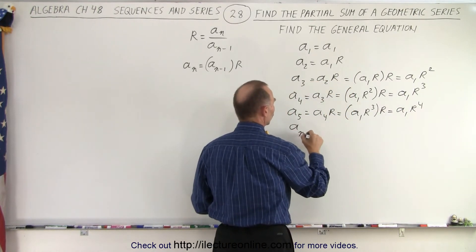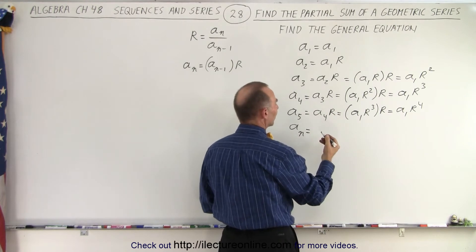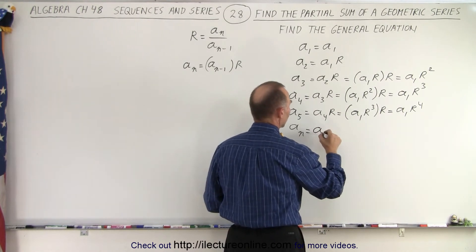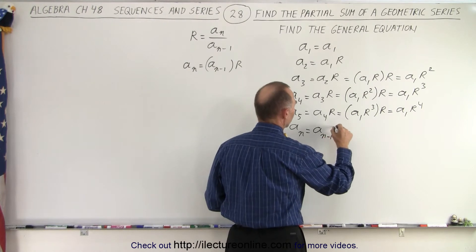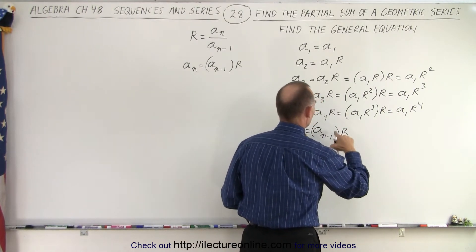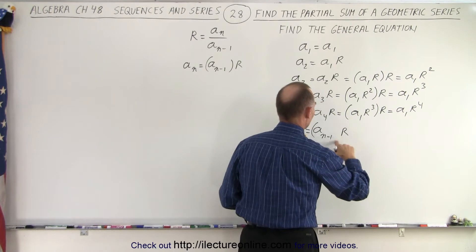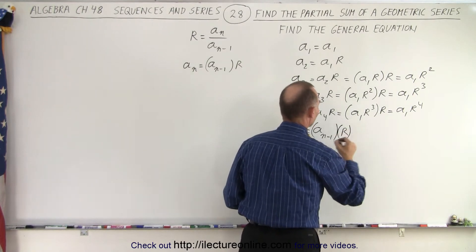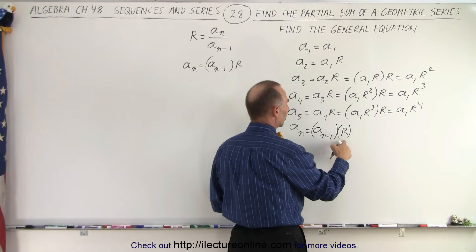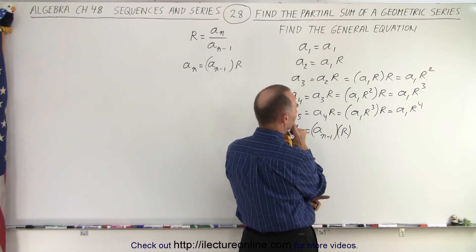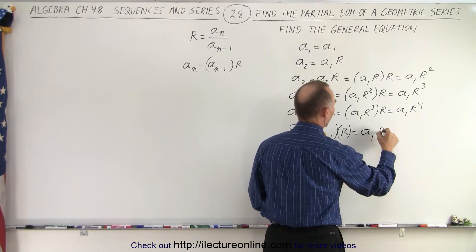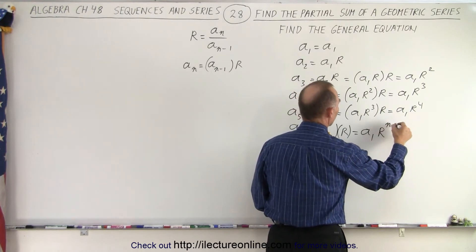In general, the nth term of the series is equal to the previous term a sub n minus 1 times R. And a sub n times R would be equal to a sub 1 times R to the n minus 1.